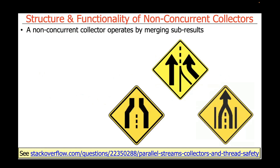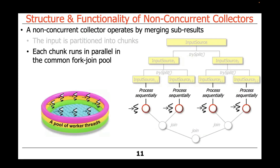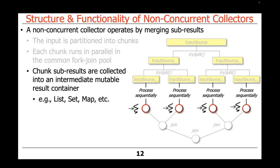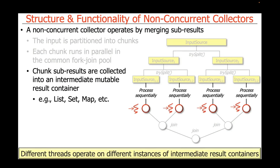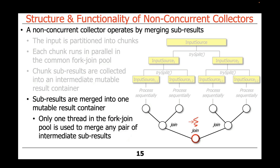A non-concurrent collector operates by merging its subresults. The inputs are partitioned up into chunks, each chunk runs in parallel in the common fork-join pool, and these subresults are collected into intermediate mutable result containers — a list, a set, a map, and so on. Different threads operate on different instances of these intermediate result containers, and when they're merged together into a single container as the tree unwinds, this is done cleverly so there's no synchronization required.